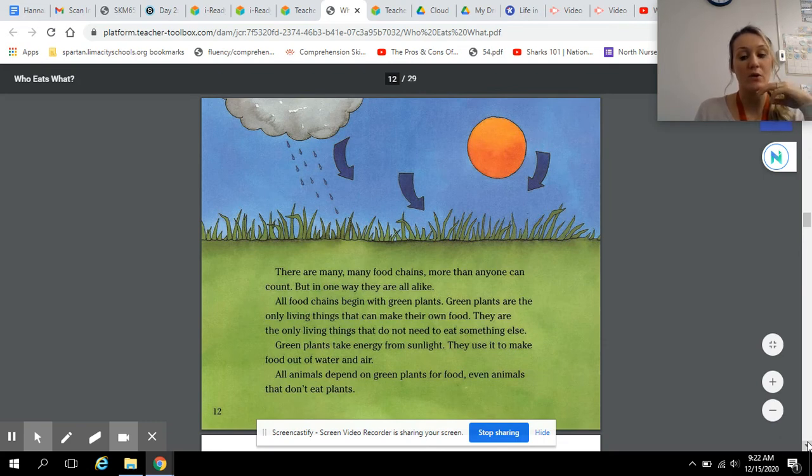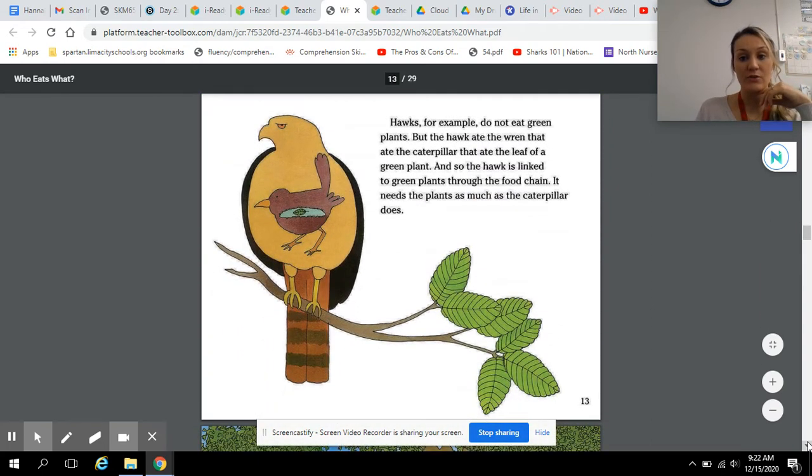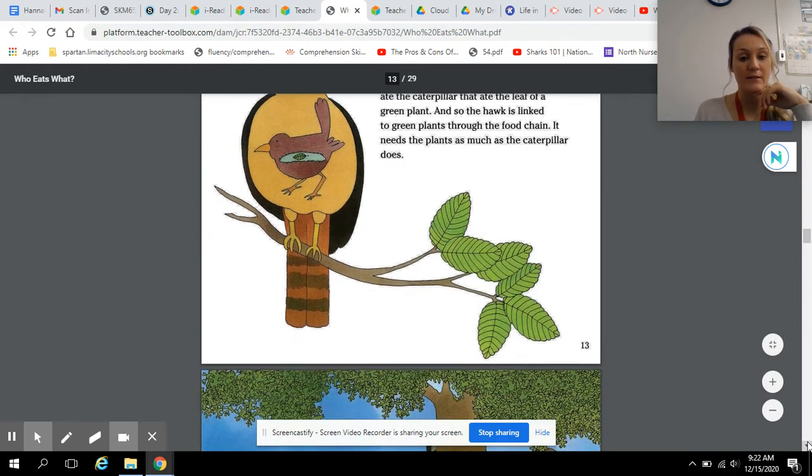All animals depend on green plants for food, even animals that don't eat plants. Hawks, for example, do not eat green plants. But the hawk ate the wren that ate the caterpillar that ate the leaf of a green plant. And so the hawk is linked to green plants through the food chain. It needs the plants as much as the caterpillar does.